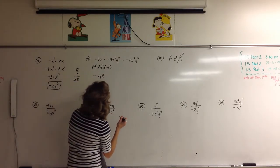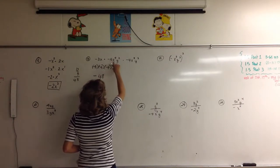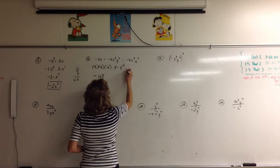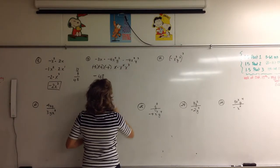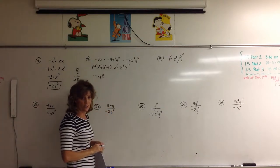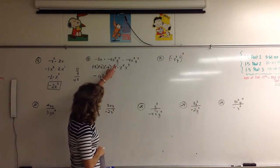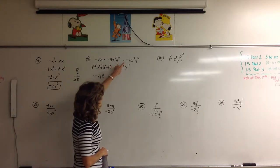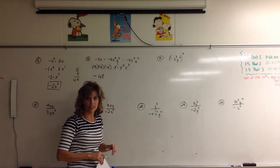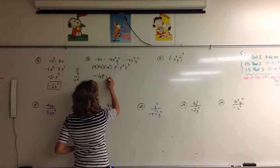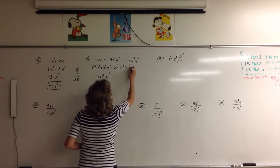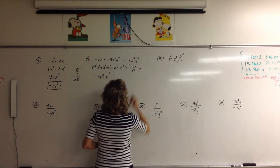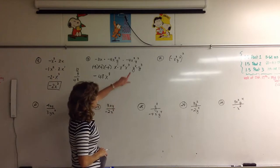Three times four is 12, and 12 times four is 48. So we've got negative 48 when we multiply the numbers. Then we've got to multiply all of the x's because they're like bases. We've got to multiply an x and an x to the fourth and an x to the third. There's an understood one right here, so that means add the exponents. I've got three bases that are the same, so I'm going to add one plus four plus three. What do I get? Eight.